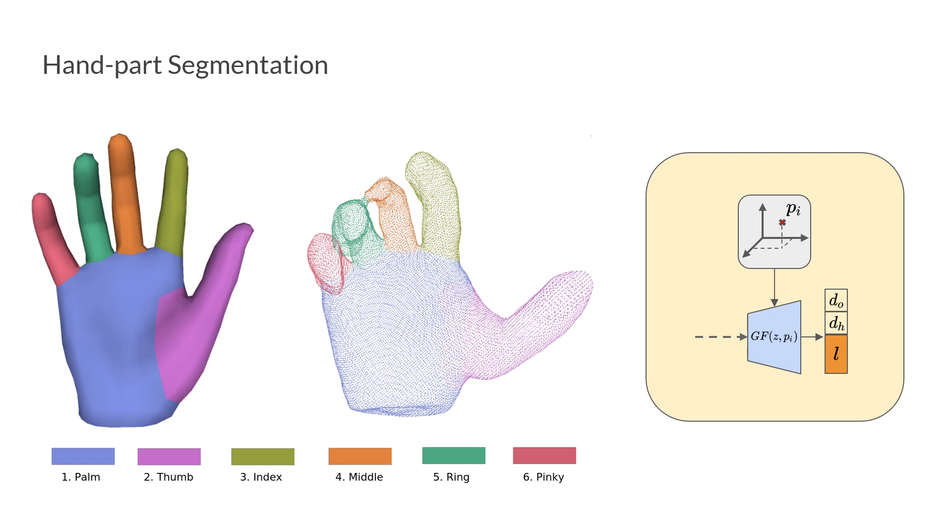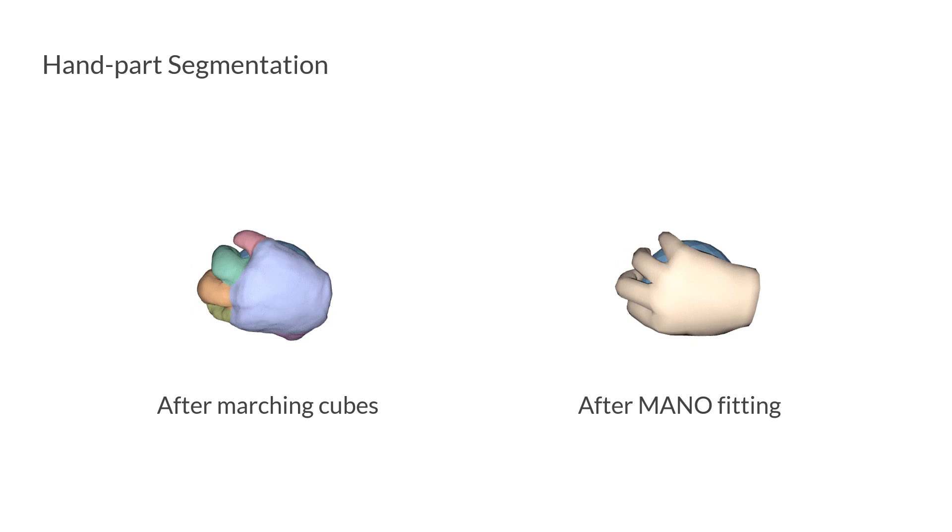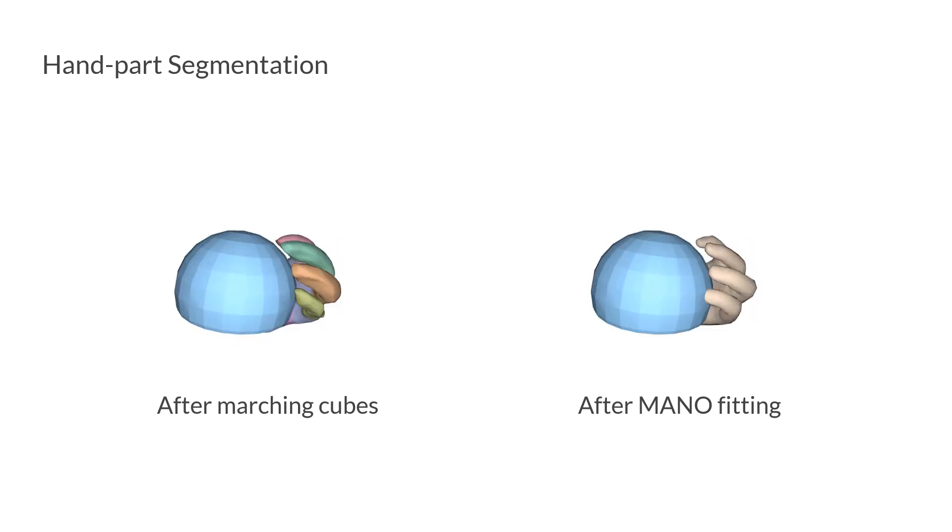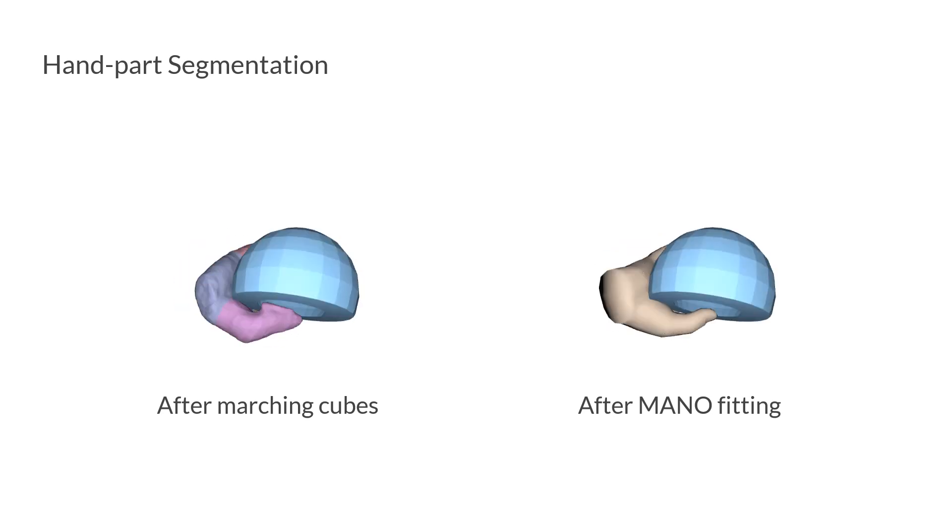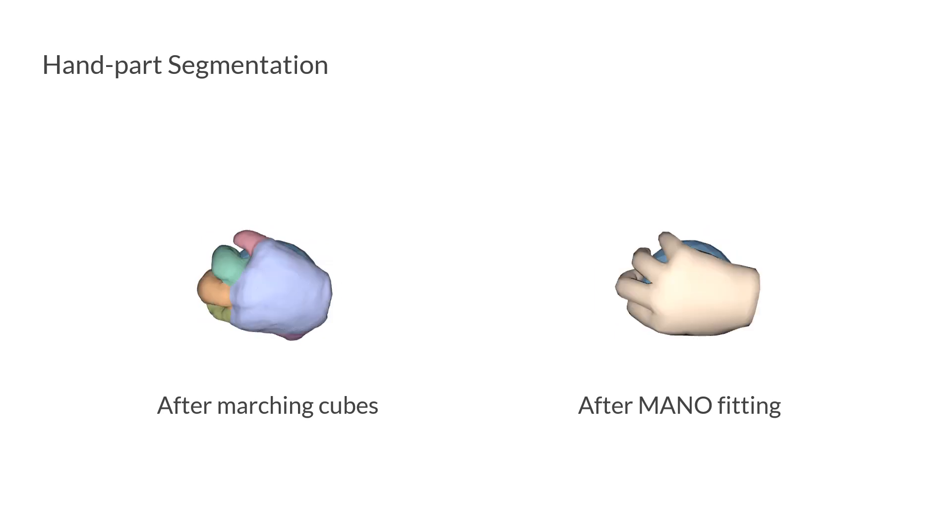To this end, we also predict the part label for each point. Given the part labels and the predefined hand segmentation mask, we optimize points on the manual hand mesh to match the predicted points.